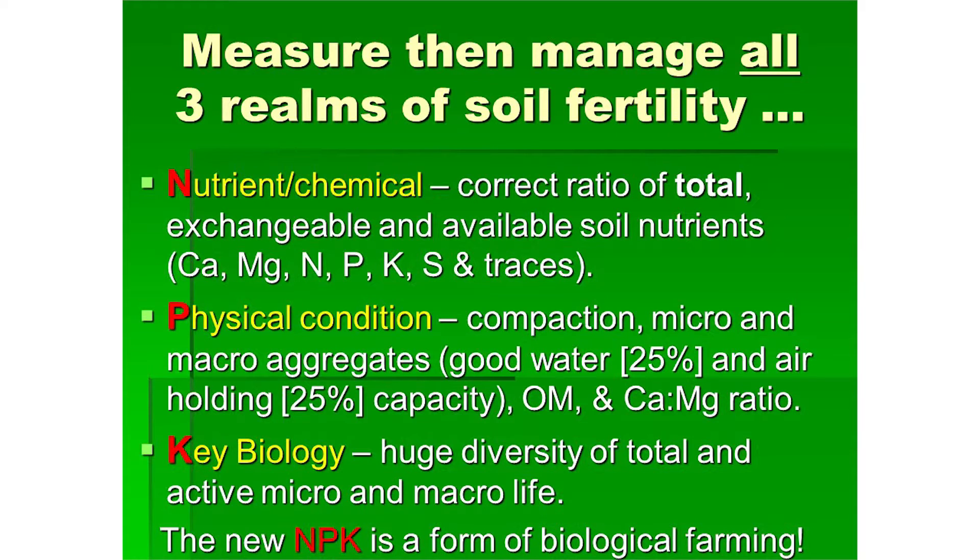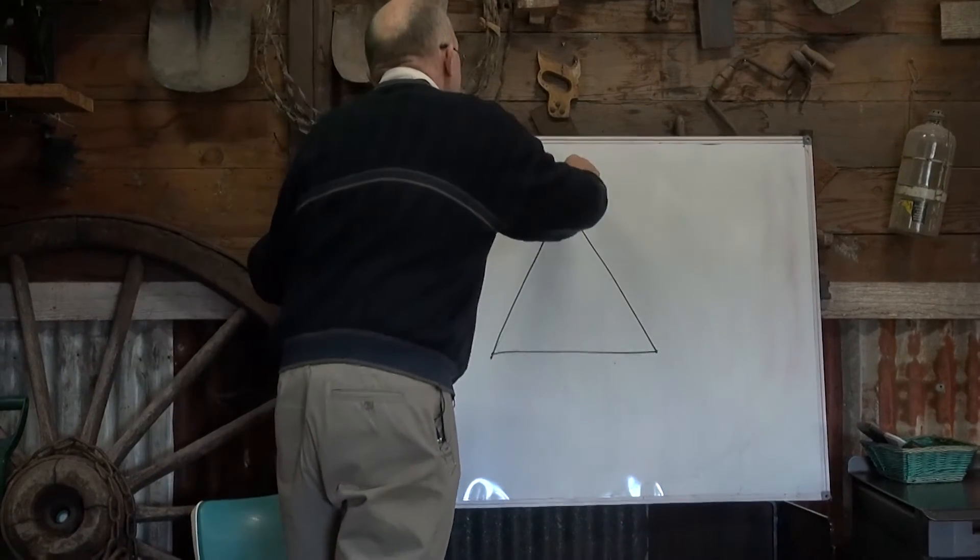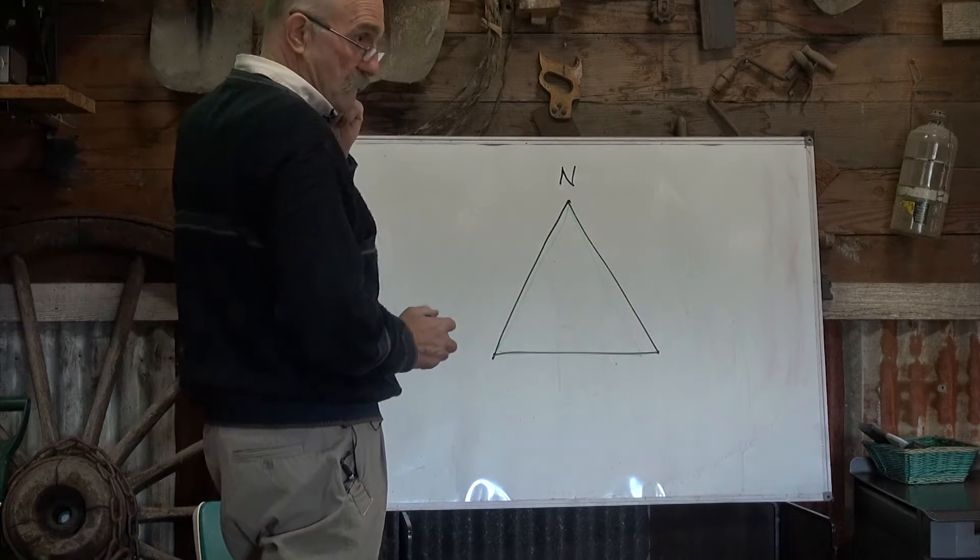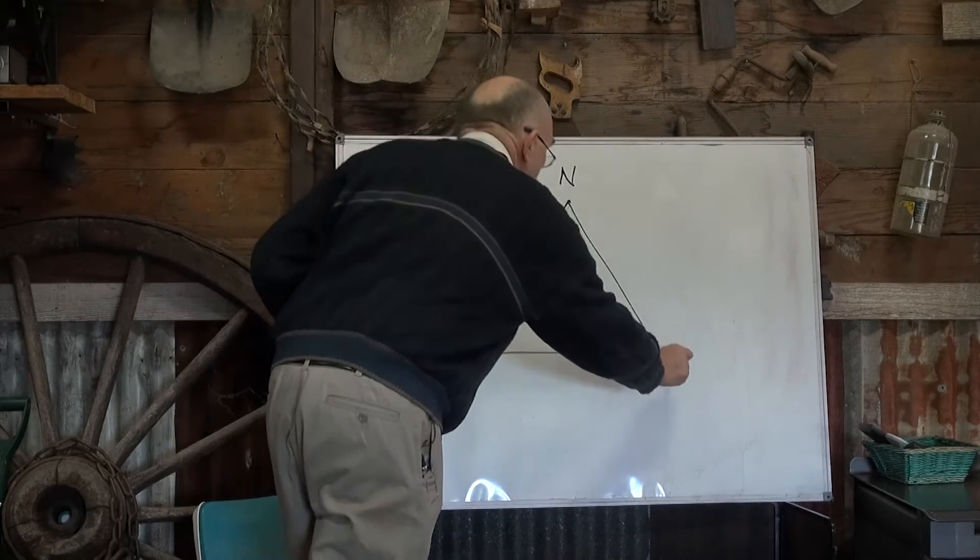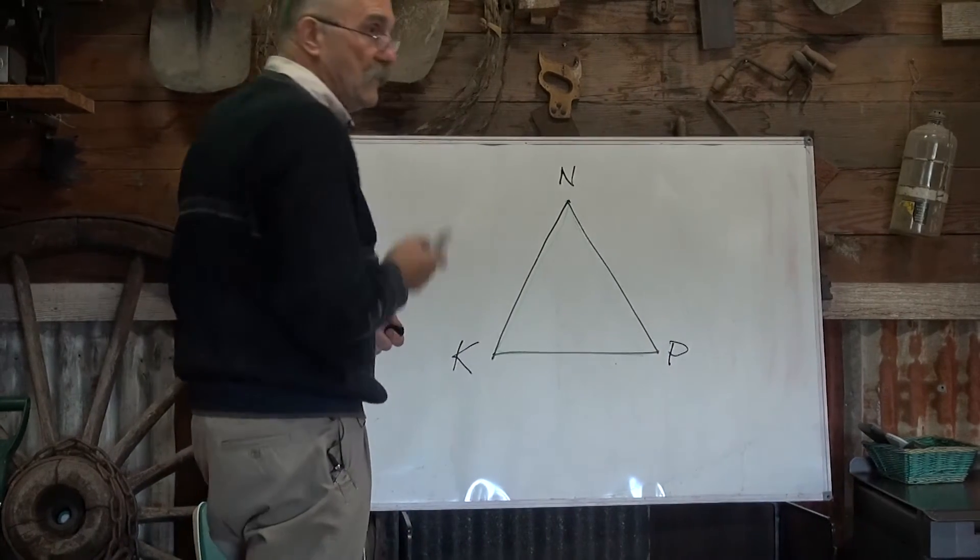So you can imagine we've got a triangle, all connected. So on that apex we have N, nutrients. On this one we have P, physical structure, and on here we have K, Key Biology.